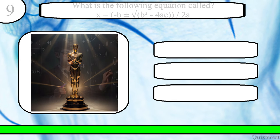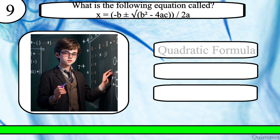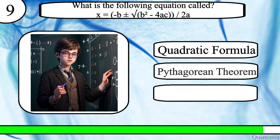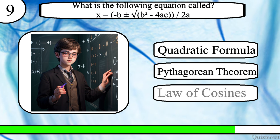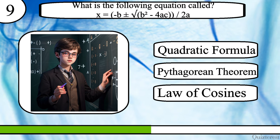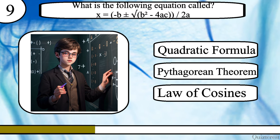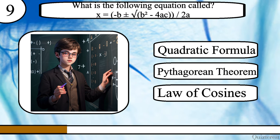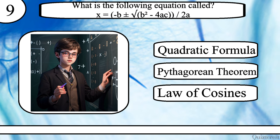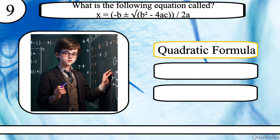Question 9. What is the following equation called? x equals negative b plus or minus the square root of b squared minus 4ac, all over 2a. The quadratic formula, the Pythagorean theorem, or the law of cosines? The correct answer is the quadratic formula.